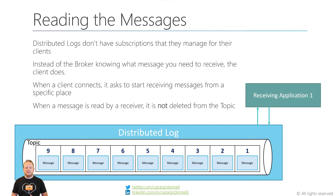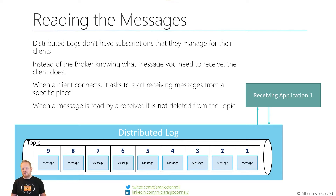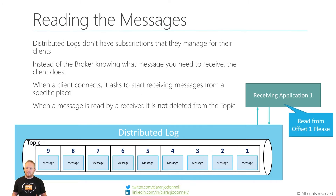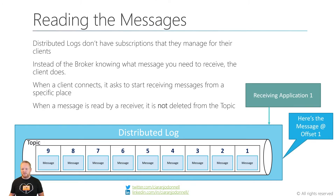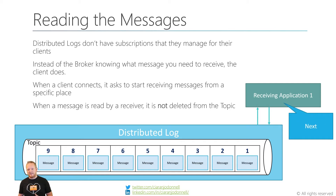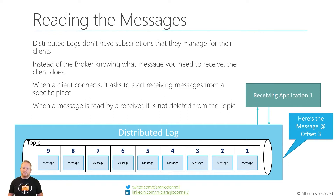When we want to read messages, because there's no subscription managing that for you, instead of the broker knowing which message you need to receive, you kind of have to know that yourself. When a client connects, it has to ask to start receiving messages from a specific place in the topic. It can either ask for the oldest message — effectively starting from the beginning — or start reading from the end, or it can tell the broker the specific offset it wants to start receiving from. So we see here: I want to read from offset one, the broker replies with the message from offset one, then we ask for the next, which would be two, then three, and so on.